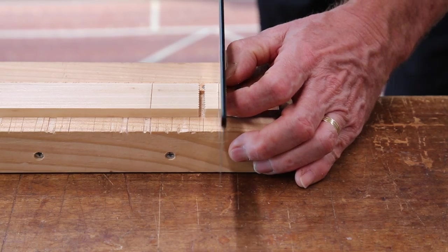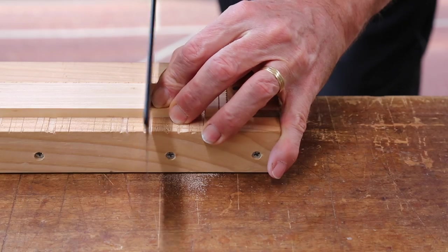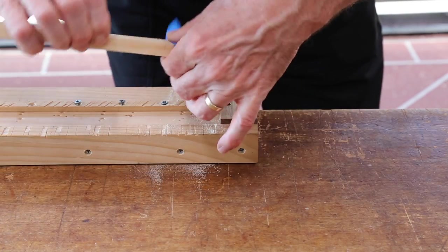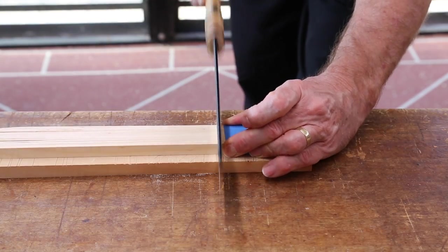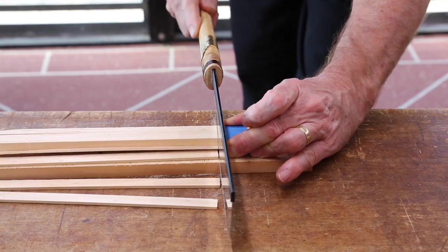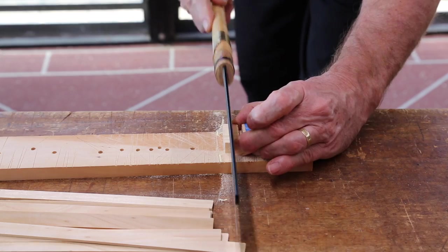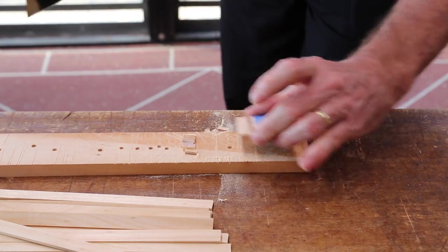Next, cut down on both of the end marks. Tape the pieces together, remove them from the jig, and cut off both ends. That completes the cutting for the type A kumiko.